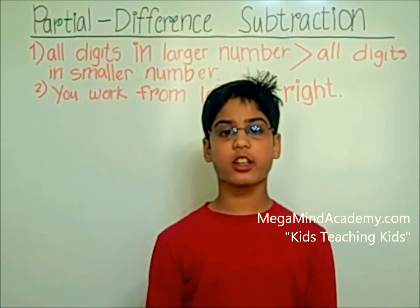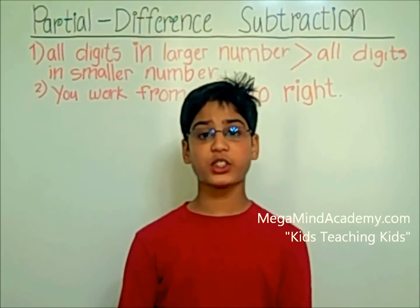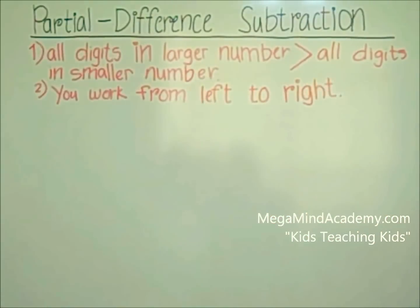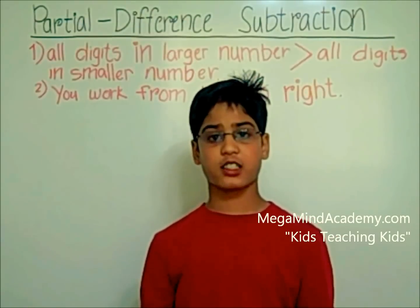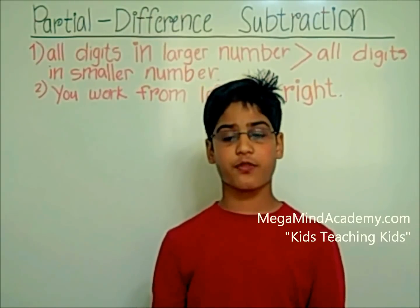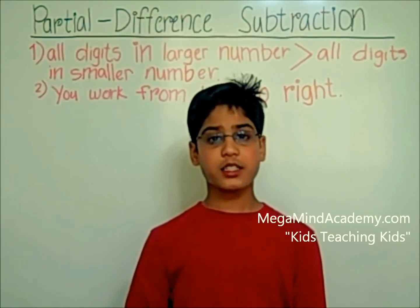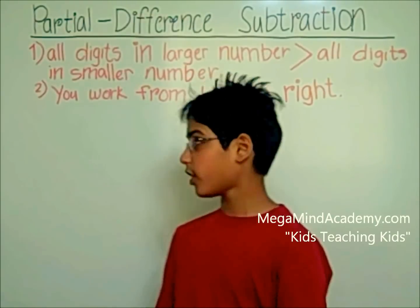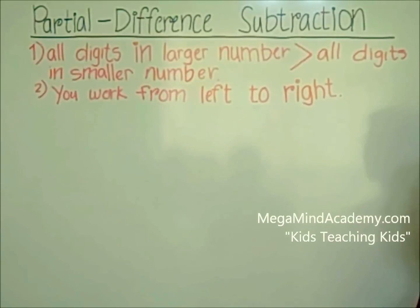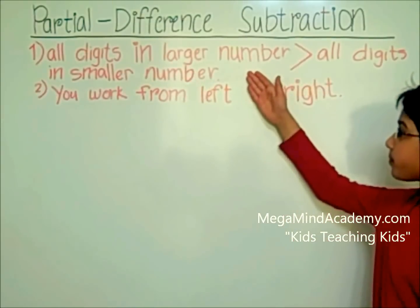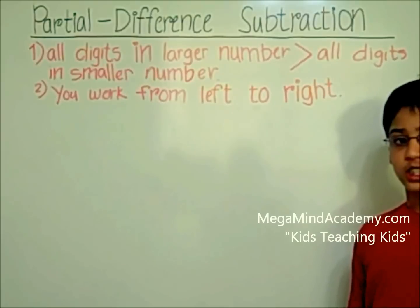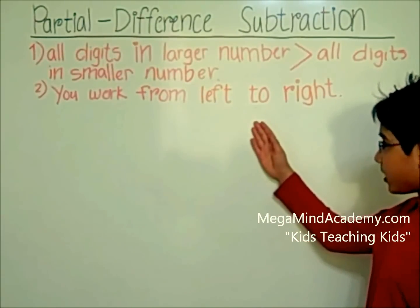Hi! Today we're going to learn about Partial Differences Subtraction. This is an easy method to subtract two or more digit numbers from one another. In this method there are two conditions. The first is that all the digits in the larger number are greater than all the digits in the smaller number. The second condition is that you have to work from left to right.